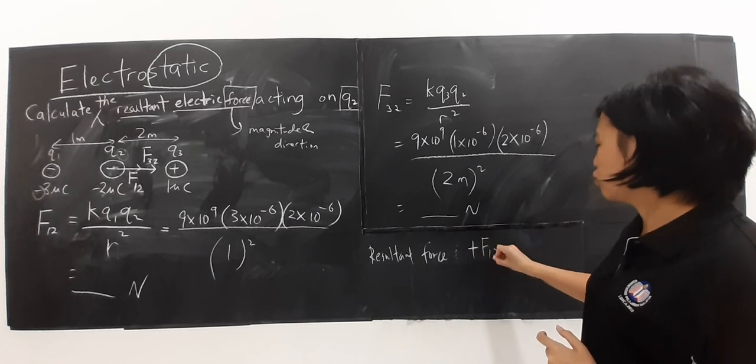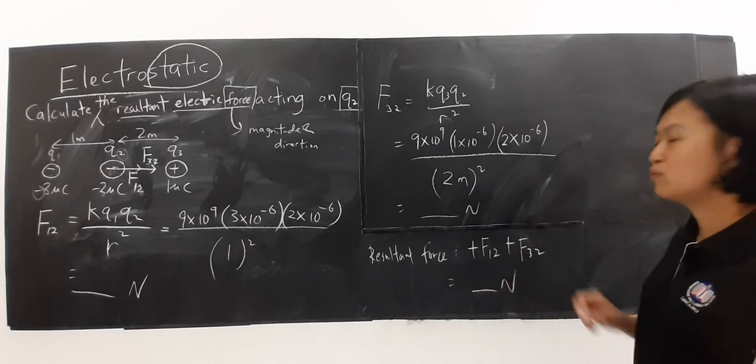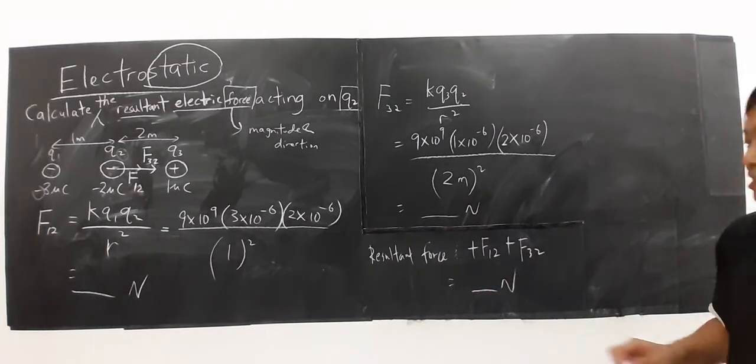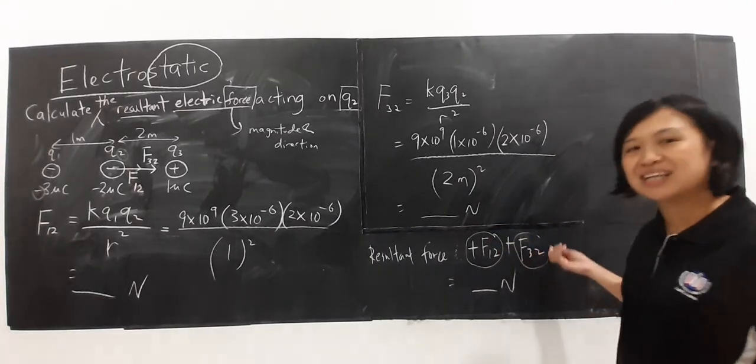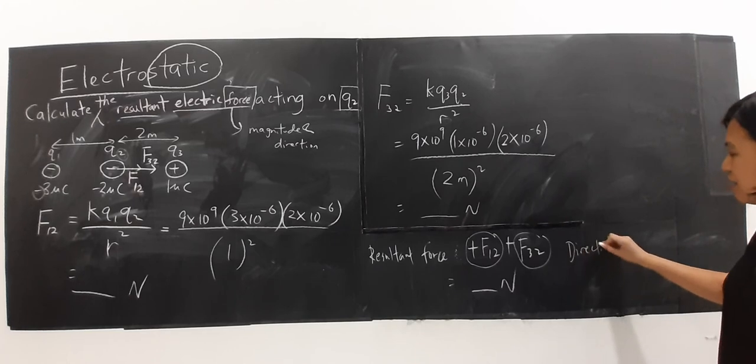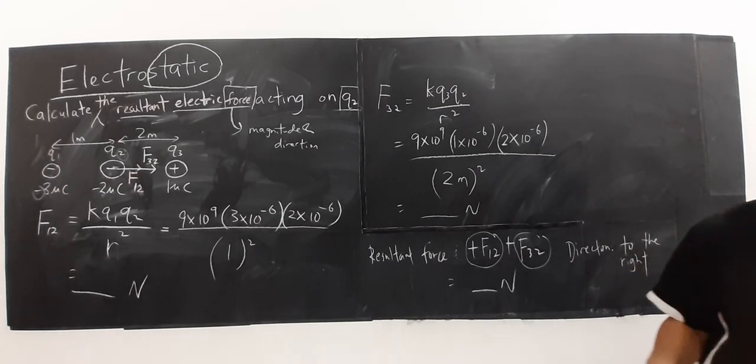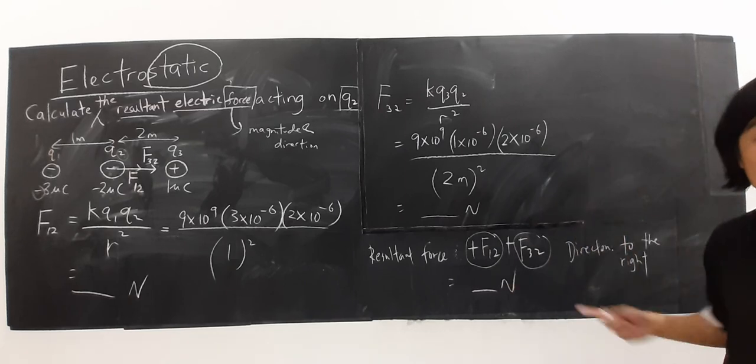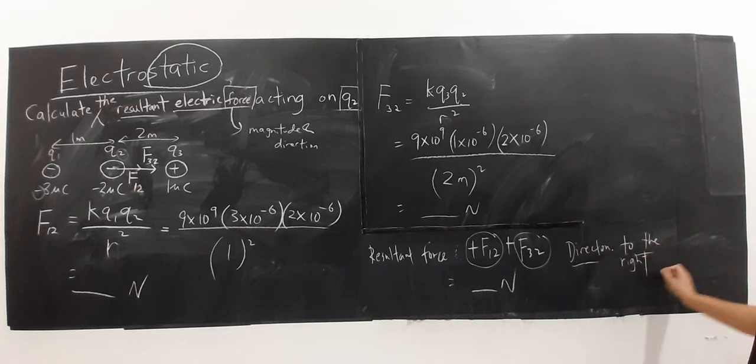Ke kanan, positive. F1,2 tambah lagi F3,2. So, that's my answer. Jadi, kalau force ini ke kanan, force kedua pun ke kanan, so what are the direction for our resultant force? We will find that to the right also. Force pertama ke kanan, force kedua juga ke kanan. Maksudnya hasil mereka, the resultant also to the right.